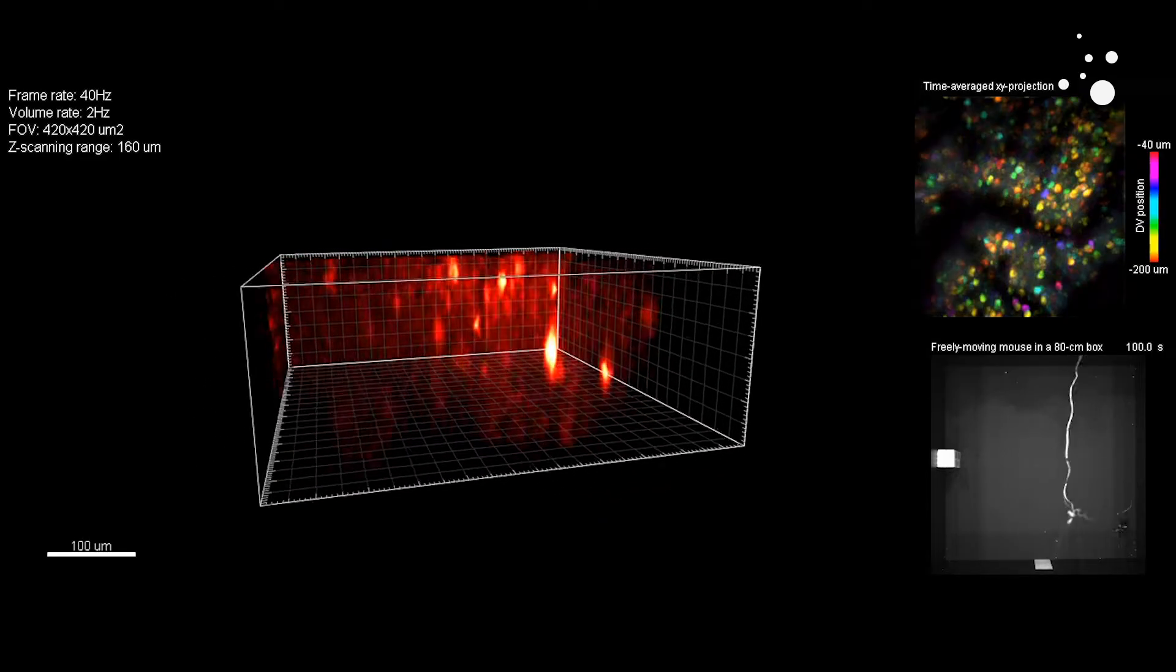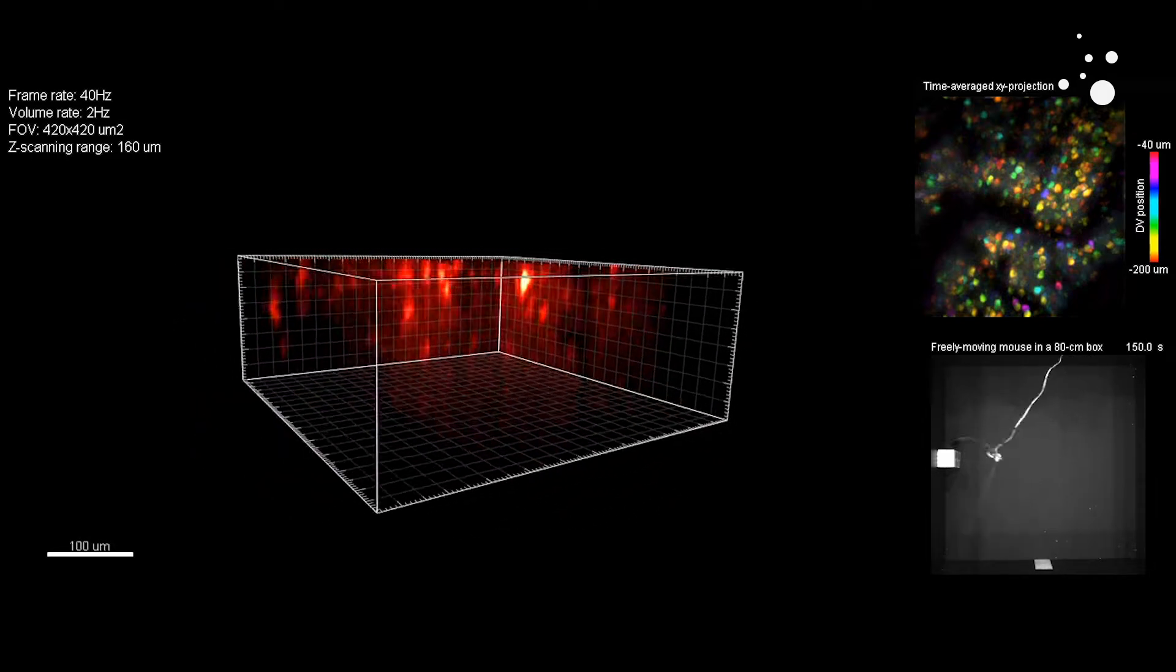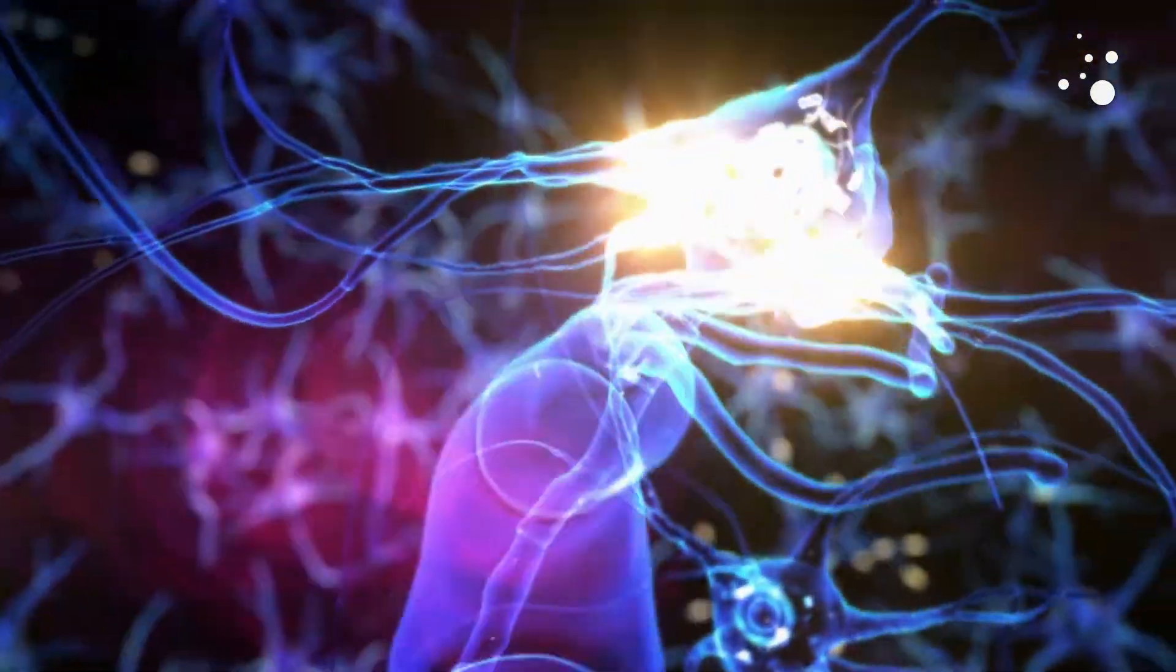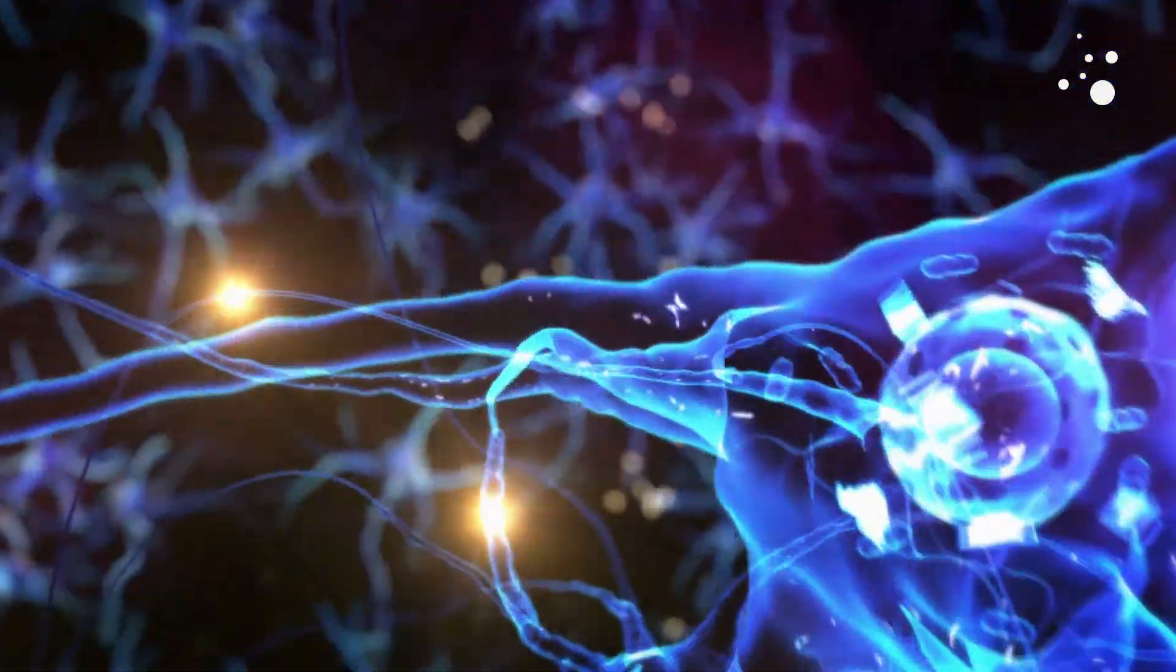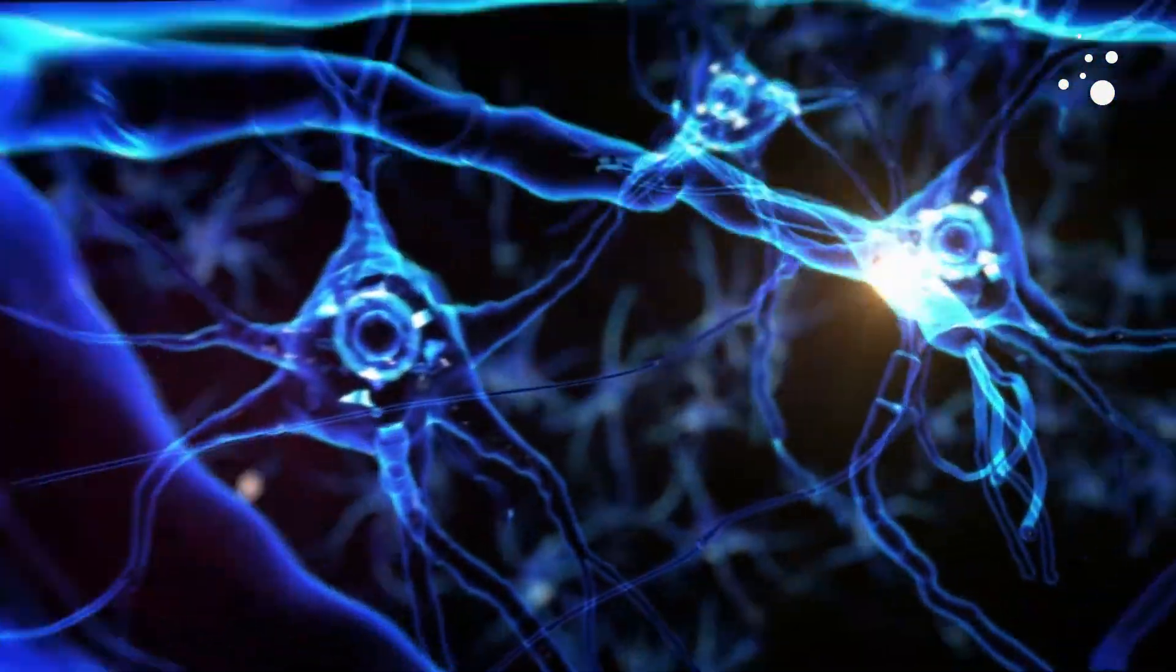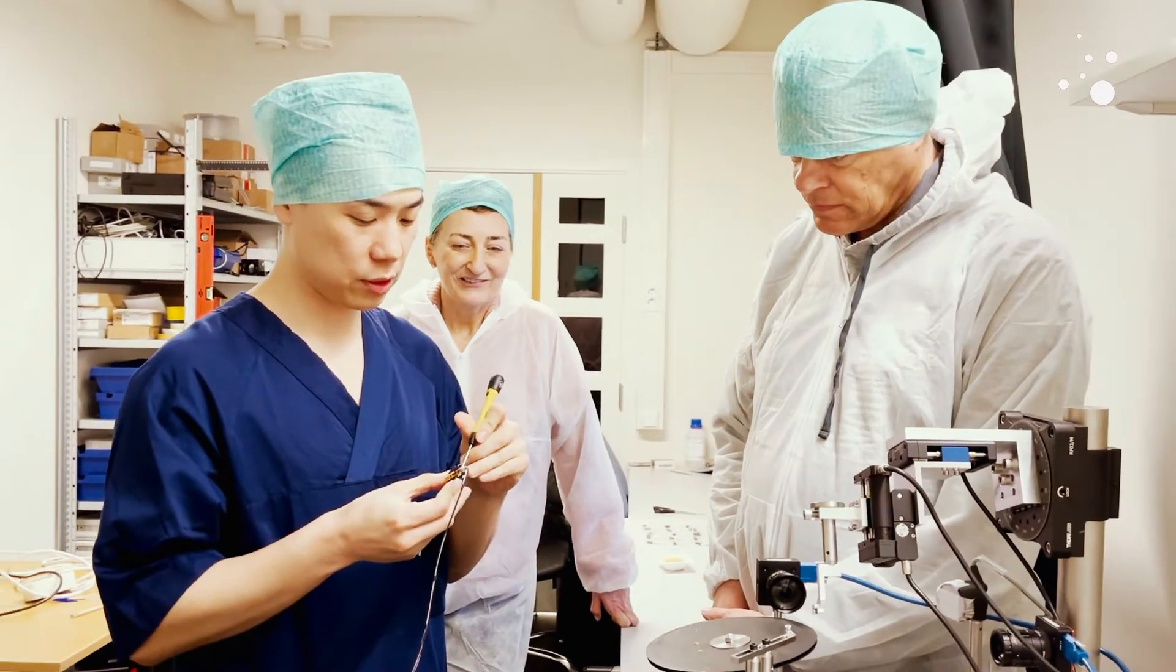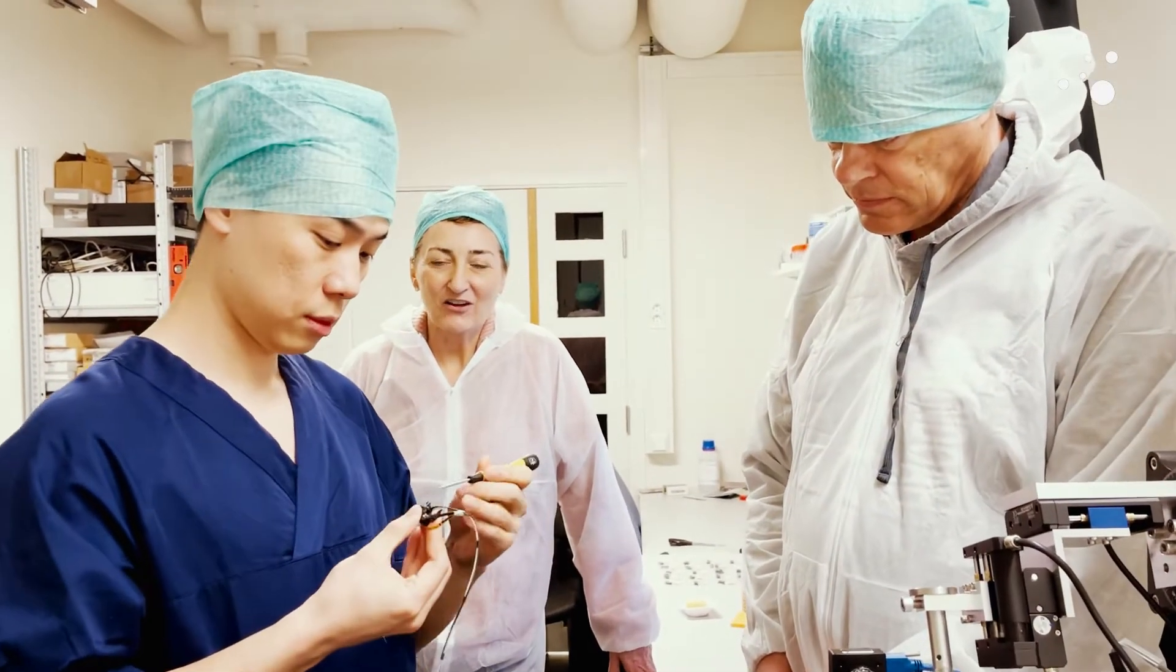Mini2P can explore different areas and mental functions all across the brain's cortex. The researchers have tested Mini2P in multiple areas of the brain, such as the navigation system, the memory hub, and the visual area. All these measurements were made while the mouse was moving freely and doing what it normally does. This was simply impossible before Mini2P.